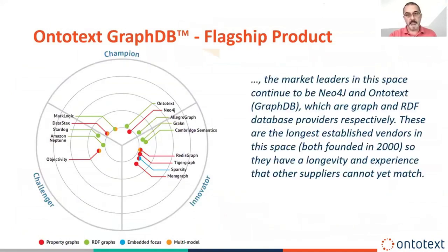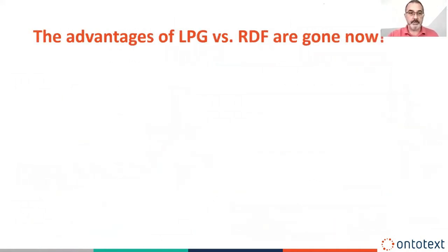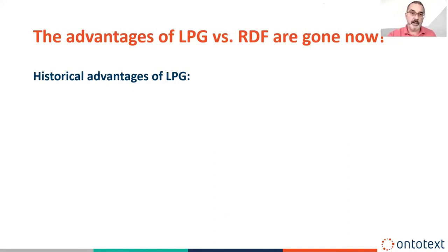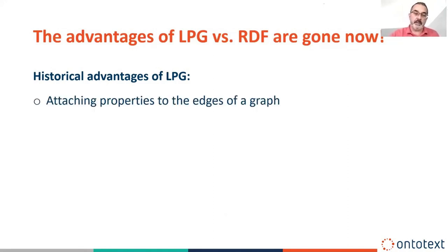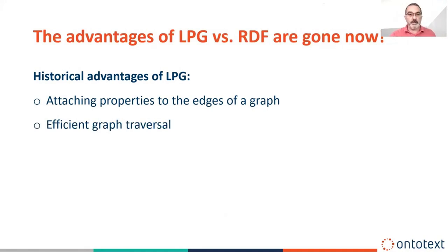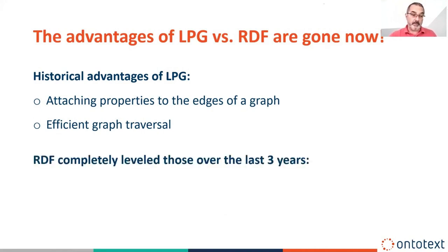We are the leader of the RDF space. The graph database field and graph technology field has a property graphs chapter and an RDF chapter. From this position, I want to tell you what were the historic advantages of property graphs and how RDF addresses them. The easiest argument for someone to make on the property graph side was that in TinkerPop and everything on top of it, you can attach properties to edges and say things about the edges in the graph, while in RDF you can only do so for the nodes. And then the second big argument was that in TinkerPop, everything is designed for providing efficient graph traversal — and historically this wasn't the case in RDF. But over the last three years, RDF addressed this in a very comprehensive manner.